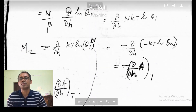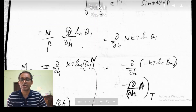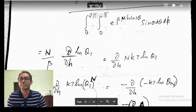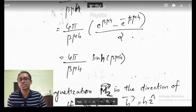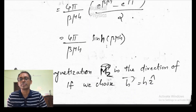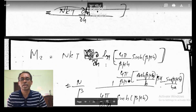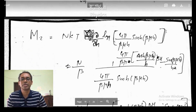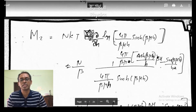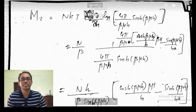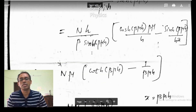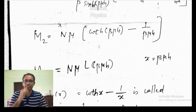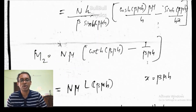For the time being, we are calculating the magnetization from the equation: M_z = N k_B T (d/dH) of log Q_1. Taking log of Q_1 and differentiating partially with respect to H — since log comes in the denominator and differentiating with respect to H brings down beta mu cos theta — we apply the product rule because H appears at two points. Applying the product rule gives M_z = N mu [coth(beta mu H) - 1/(beta mu H)].